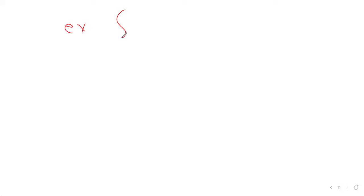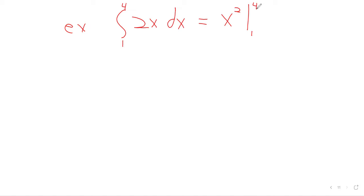For example, the integral from 1 to 4 of 2x dx. To find this integral we need an antiderivative, x², and then we plug in 1 and 4 and subtract. Our notation for that is a vertical bar with 1 at the bottom and 4 at the top — that vertical bar says plug in those numbers and subtract them.